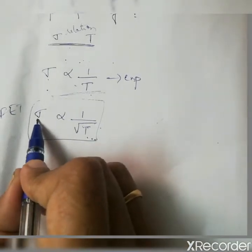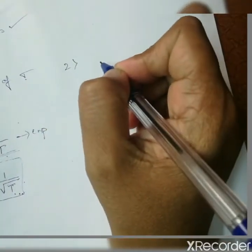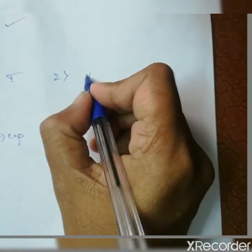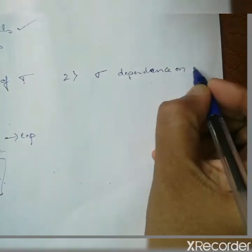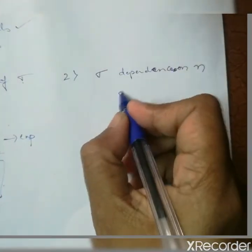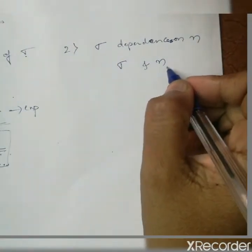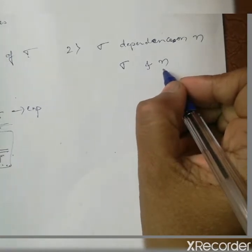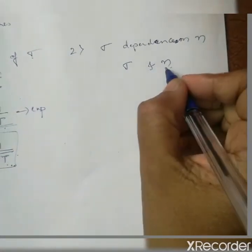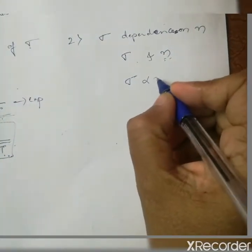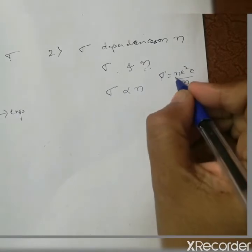So CFET failed in explaining the temperature dependence of electrical conductivity. The second failure was the dependence of electrical conductivity on electron concentration. Free electrons are responsible for conduction, and their concentration is represented by n. From the expression sigma = ne²τ/m, sigma is directly proportional to n.